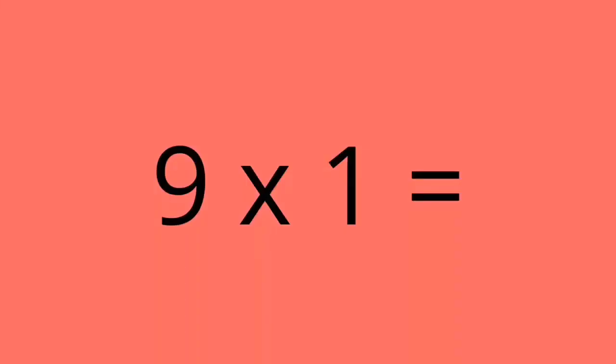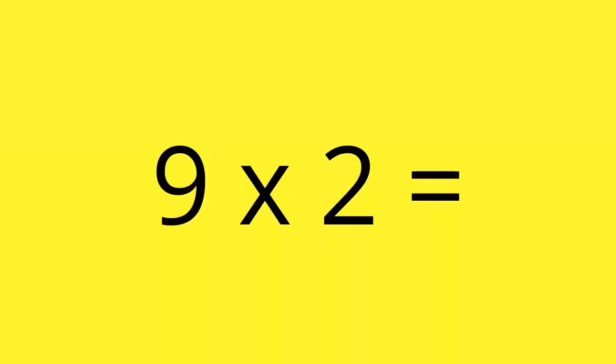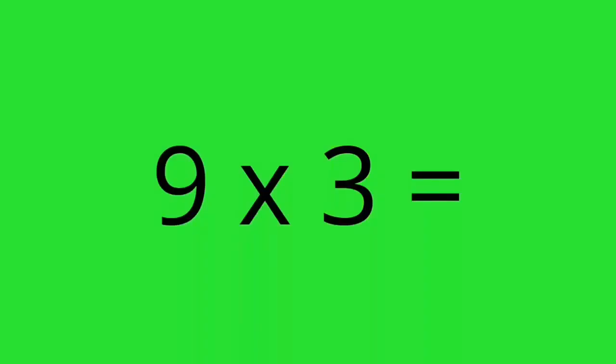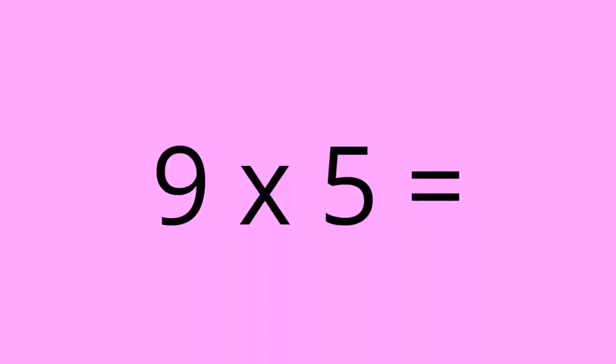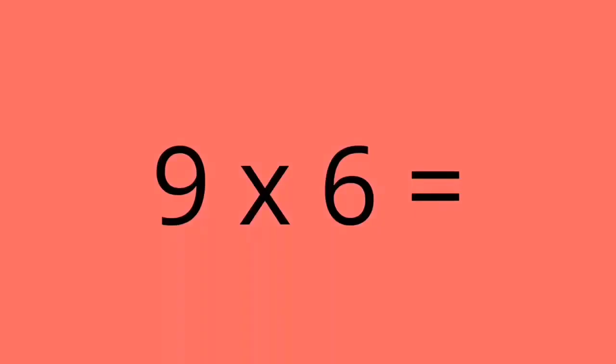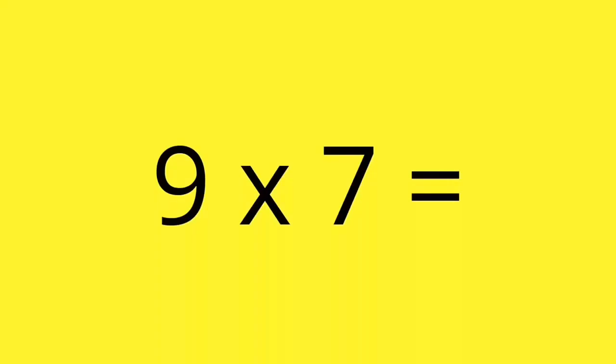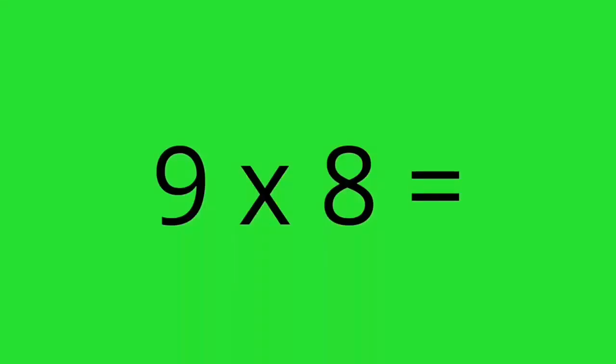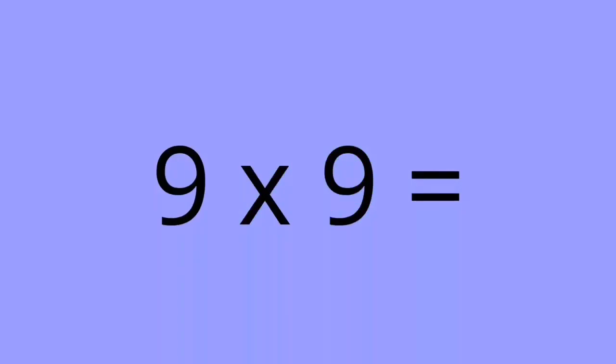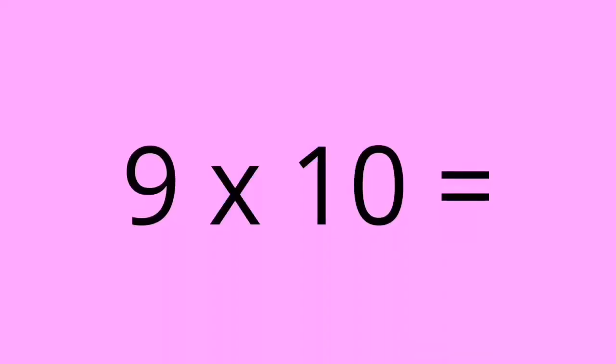9 times 1 equals 9. 9 times 2 equals 18. 9 times 3 equals 27. 9 times 4 equals 36. 9 times 5 equals 45. 9 times 6 equals 54. 9 times 7 equals 63. 9 times 8 equals 72. 9 times 9 equals 81. 9 times 10 equals 90.